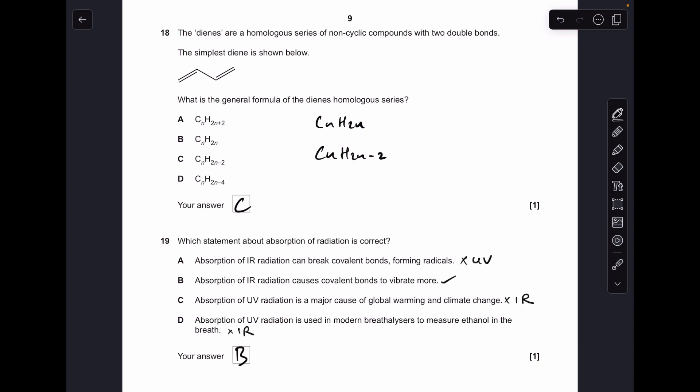Number nineteen: you can see I've already answered it, so B is the answer. So why is A wrong? UV forms the radicals by breaking the bonds. Infrared is a cause of global warming and climate change, and infrared is used in modern breathalyzers, not UV.